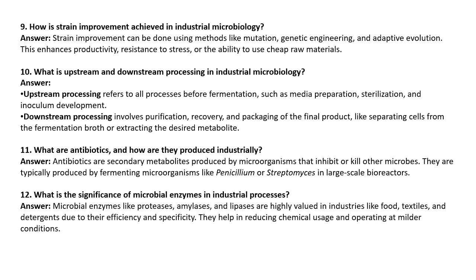How is strain improvement achieved in industrial microbiology? Strain improvement can be done using methods like mutation, genetic engineering, and adaptive evolution. This helps to enhance productivity, resistance to stress conditions, or the ability to use cheaper raw materials.